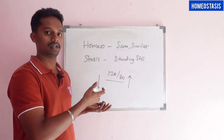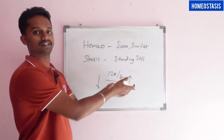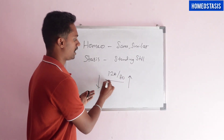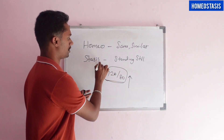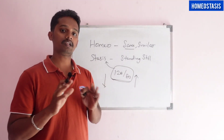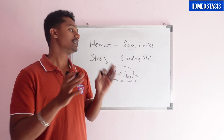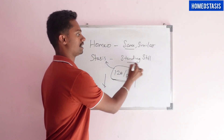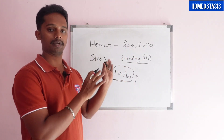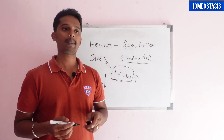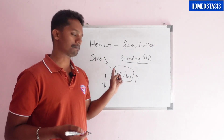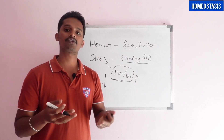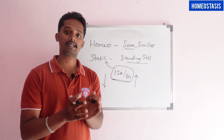If it is too low or too high, there are many conditions — for example, hypertension. This is what the body tries to maintain. That is the meaning of stasis.